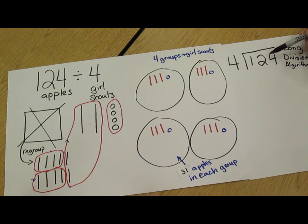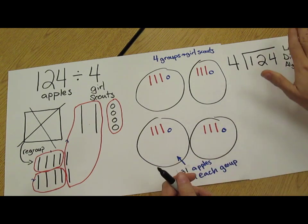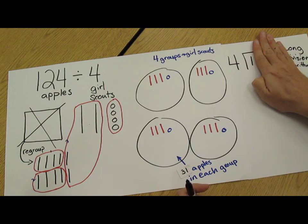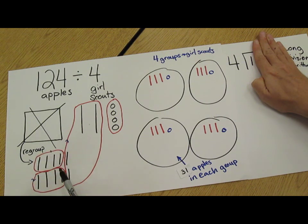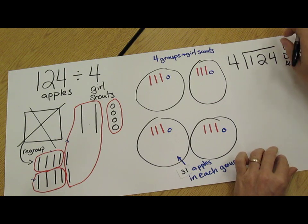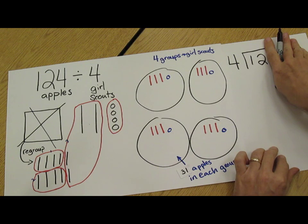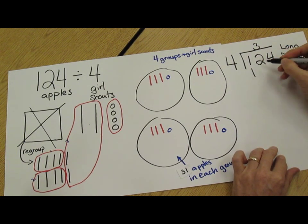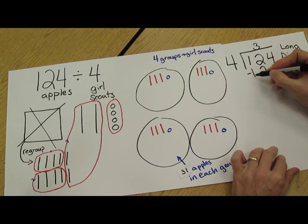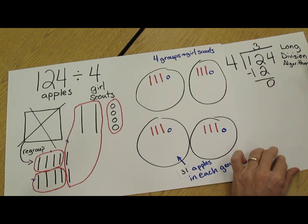we first look at the hundreds. We can't split 100 into 4 equal groups, so we would have to regroup that 100 as 10 tens. 10 tens added to the 2 tens we originally had would give us a total of 12 tens which can be split into 4 equal groups with 3 tens in each group. 4 groups of 3 tens would give us 12 tens, and we would have no tens left over.